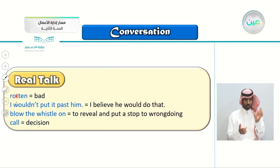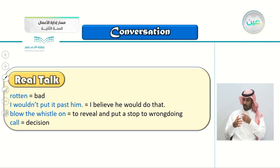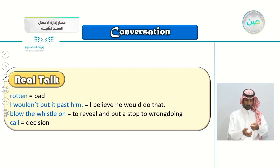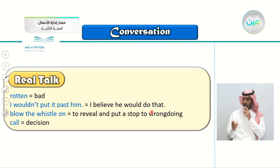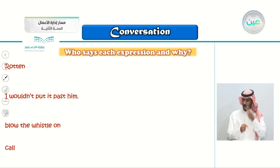Vocabulary from the real talk: 'Rotten' means bad — 'he put you in a rotten position' means a bad position. 'I wouldn't put it past him' means I believe he would do that — it always implies a negative or wrong action. 'Blow the whistle on him' means to reveal and put a stop to wrongdoing — to tell the manager. 'Call' means decision, as in 'it's your call' — it's your decision. This word is also used in sports with referees, who make calls about plays such as foul, fair, safe, or out.